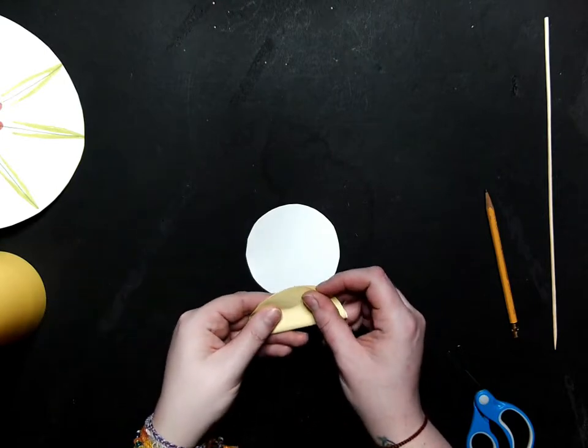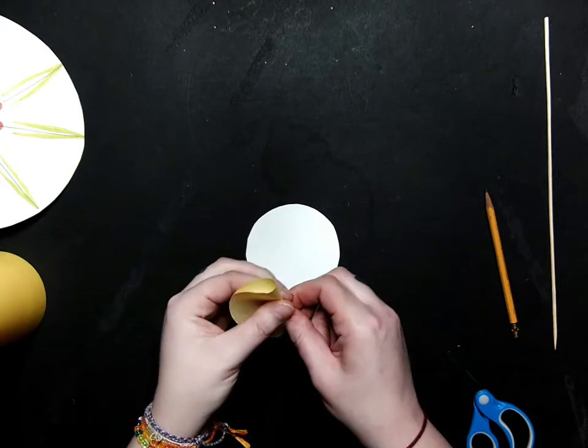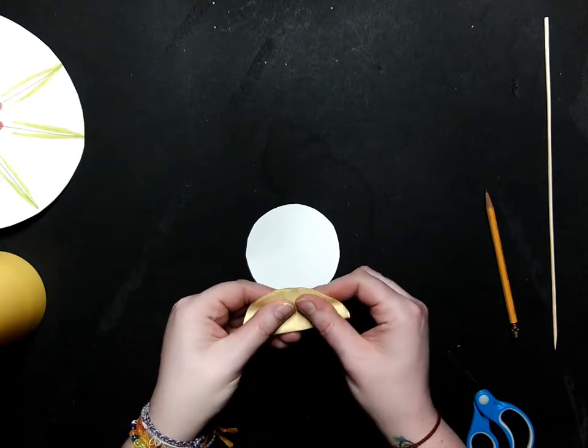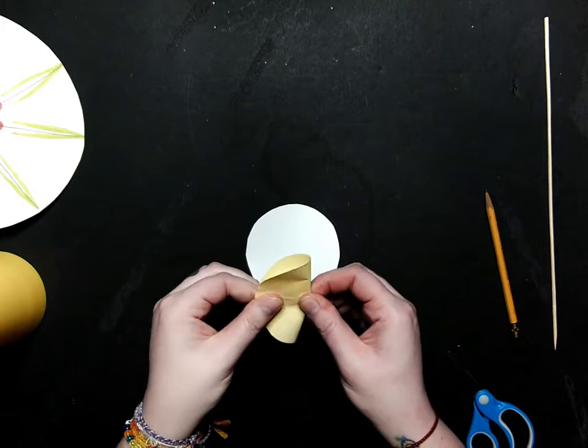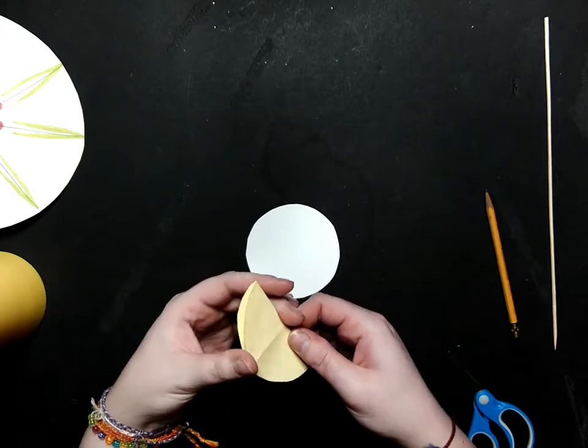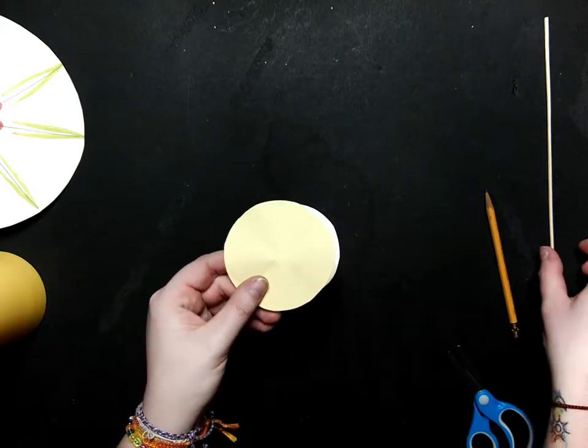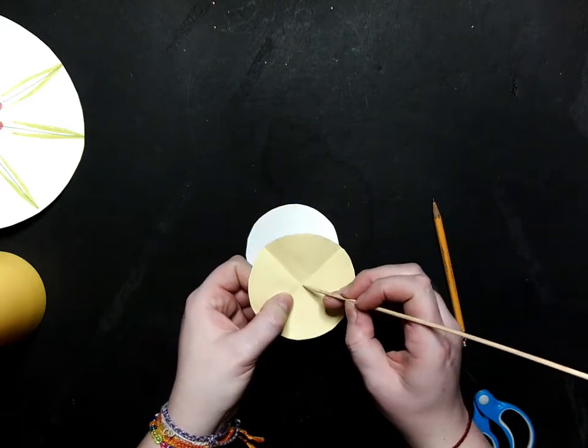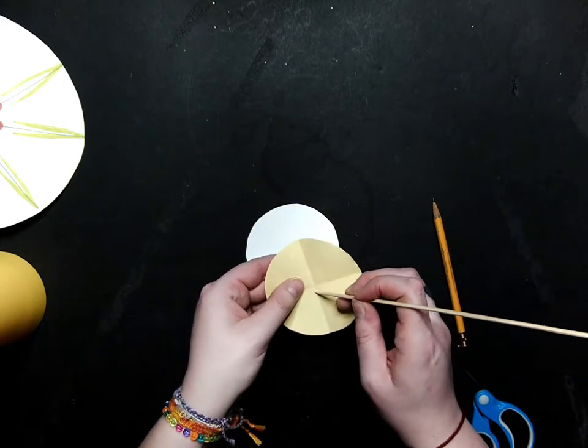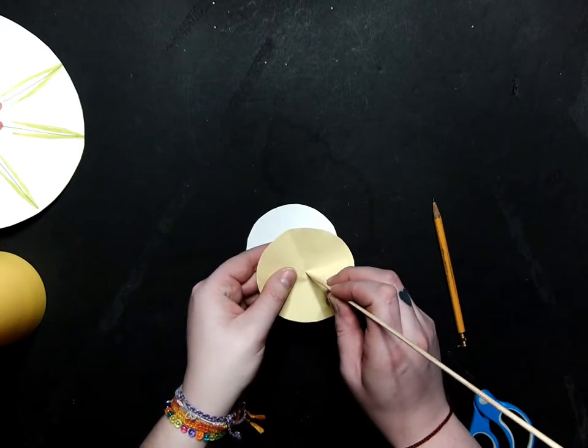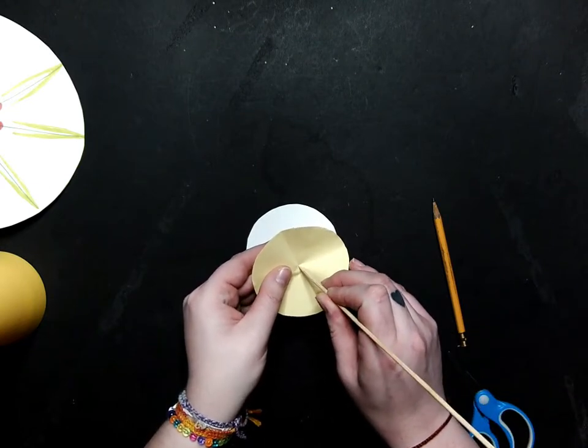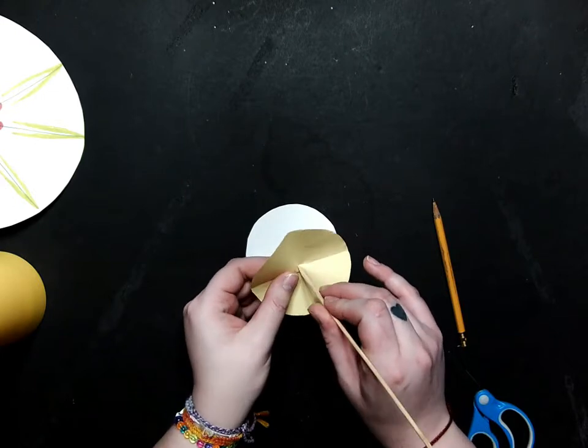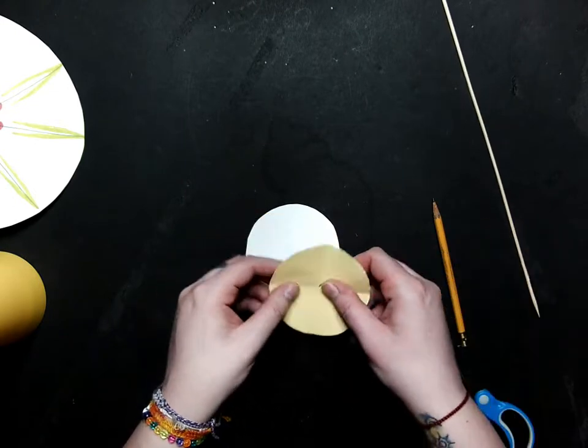So what I'm going to do is I'm going to fold this in half, and then in half again. And the spot where those lines cross is where I'm going to poke a hole with my skewer. You can ask an adult for help with this. Just do it carefully.